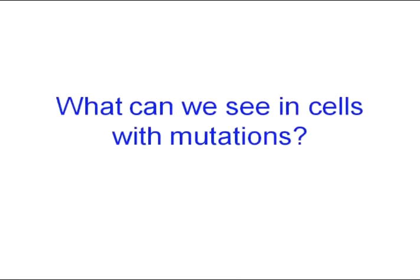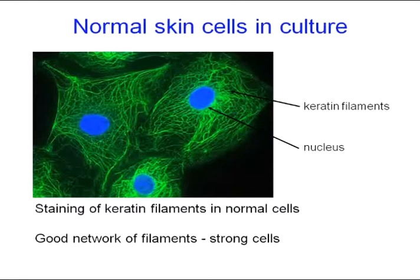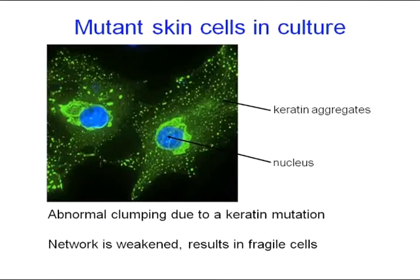Peter has already briefly mentioned this, but I'm going to show these similar pictures again — that's what we can see when we look at cells in the lab that have mutations. Some of you have had biopsies taken from your skin. In the lab, we can grow these cells in culture and then look at them in more detail. If we stain them with particular stains, we see this nice network of filaments. Whereas if there is a mutation in one of these cells, then we get keratin clumping and very few filaments, and this is what gives rise to the fragile cells.